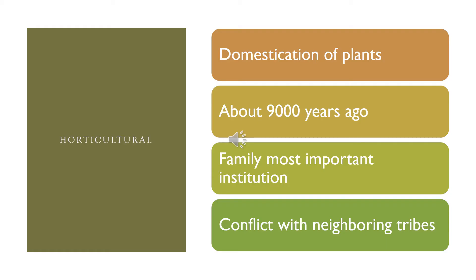The next stage is generally horticultural or pastoral. Horticultural looks at the domestication of plants — you are starting to plant plants deliberately, harvest seeds, and store them for future use. This begins around 9,000 years ago, and the family was the most important institution.